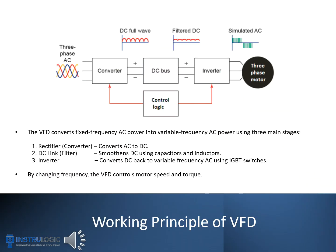A VFD converts fixed-frequency AC power into variable-frequency AC power. This process happens in three main stages. First, the Rectifier or Converter converts AC power into DC power. Second, the DC Link or Filter smooths the DC using capacitors and inductors to remove ripples. Third, the Inverter converts the DC back into AC, but with a variable frequency and voltage, using IGBT switches. By changing the frequency of the output AC, the VFD controls the speed and torque of the motor.